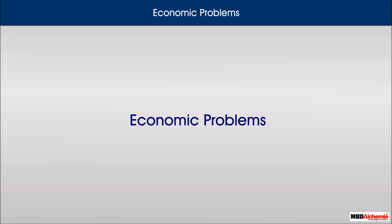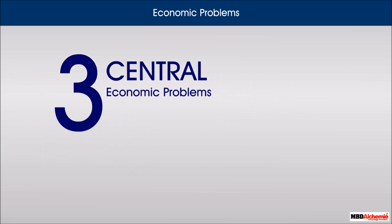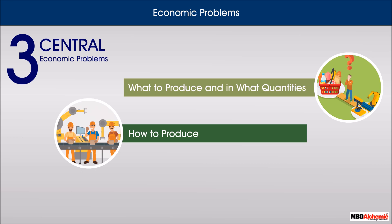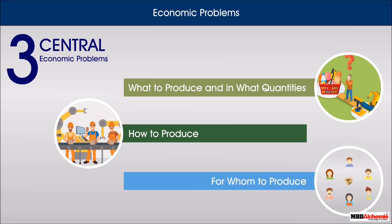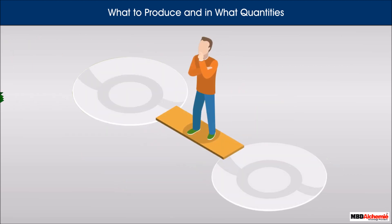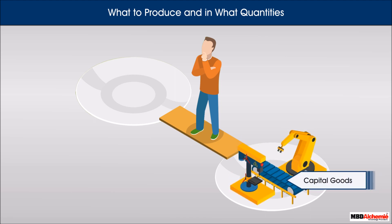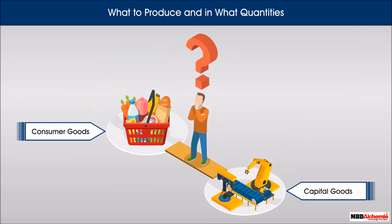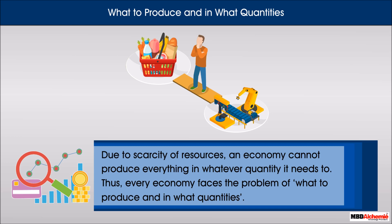Every economy faces three central problems. The first is the problem of what to produce and in what quantity. Suppose an economy has resources worth rupees two crores. Assuming constant technology, the economy can utilize these resources entirely either for the production of capital goods or for the production of consumer goods. Since both goods are needed, the quantity produced of each depends upon the wisdom of planners in a planned economy and upon market forces of demand and supply in a free market economy. Due to scarcity of resources, an economy cannot produce everything in whatever quantity it needs, and thus faces the problem of what to produce and in what quantities.